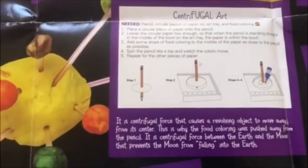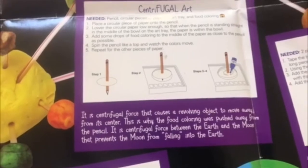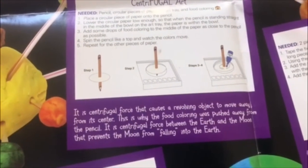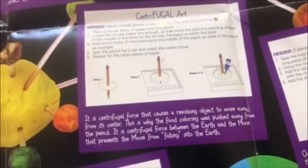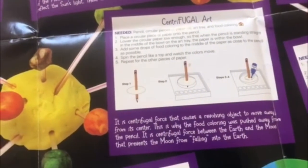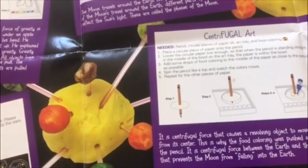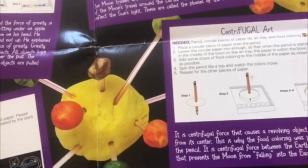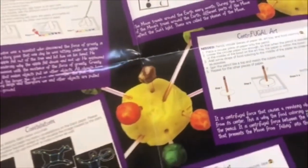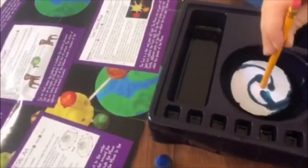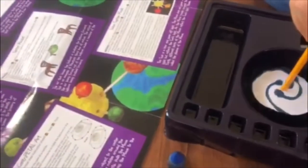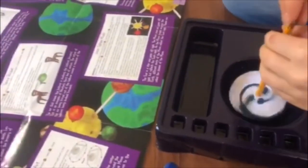It explains about the centrifugal force that causes the revolving object to move away from its center, and that's why the food coloring was pushed away from the pencil. It is centrifugal force between Earth and the Moon that prevents the Moon from falling into the Earth. So the point of this is putting the dye in the middle, and then they can see how when it spins, the ink is pushed away from the center.